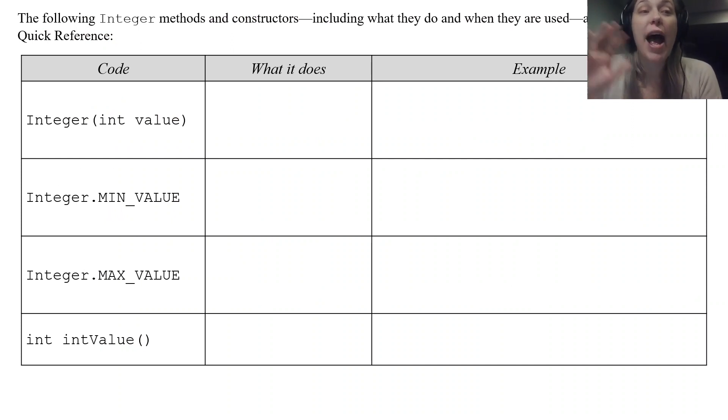So Integer has quite a few methods that go along with it. We're going to focus on these four. You have to know what they do and how they're used but they are part of the Java quick reference. So that formula sheet you're given on the AP exam, you do get these lines of code and an explanation of what it does on there. But you're going to want to know what's going on there.